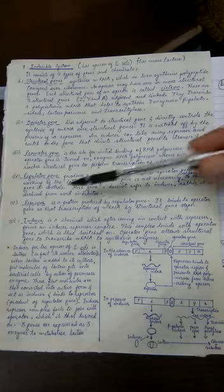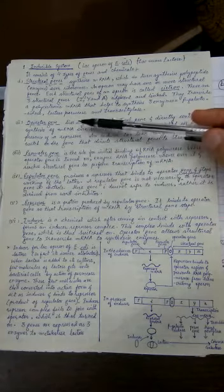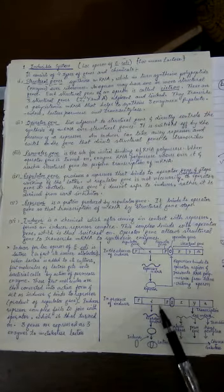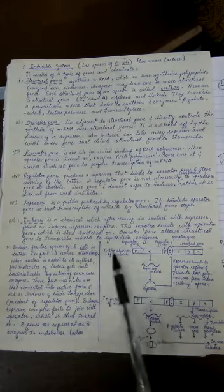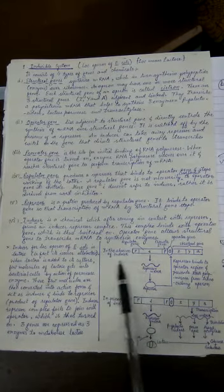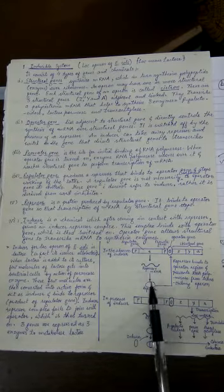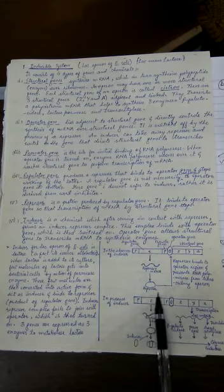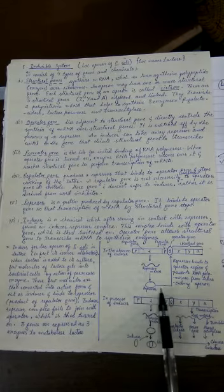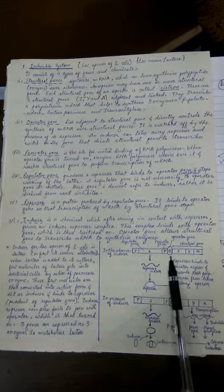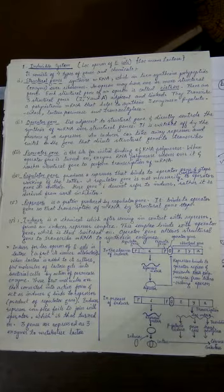So as long as this repressor is attached to the operator gene you can see I have mentioned here. If the inducer is absent from the picture then this gene will undergo transcription followed by translation and finally a repressor molecule is formed. This repressor molecule will attach with the operator and as long as it is attached here the machinery is switched off.